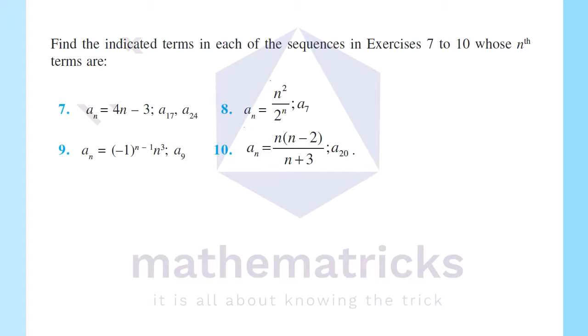Find the indicated terms in each of the sequences in exercises 7 to 10. The terms to find are a₁₇ and a₂₄. The general term is aₙ = 4n - 3. In the last session we found the first 5 terms; now it is specific to the 17th and 24th terms.